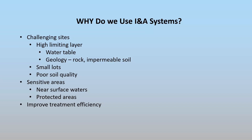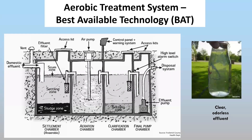We have what's called an advanced treatment unit, also known as best available technology or BAT in Maryland. These are basically almost like a miniature wastewater treatment plant. The unit replaces a septic tank and provides some of the same functions as a passive septic tank, but also adds the important addition of aeration. That aeration is key to providing beneficial bacteria in the system to help break down nutrients and organics.